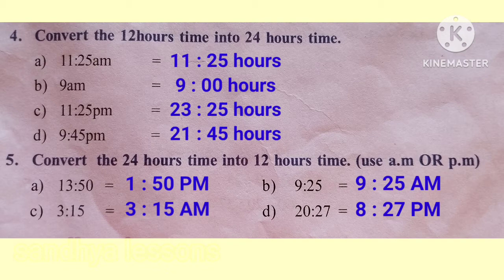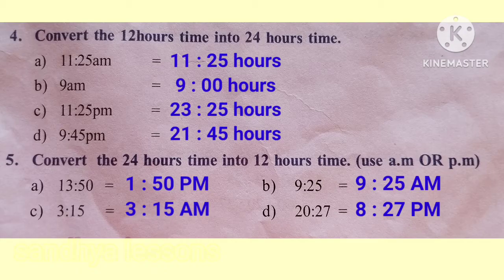D: 9:45 PM equals 21 hours 45 minutes. Fifth question: convert the 24-hour time into 12-hour time using AM or PM. 13 hours 50 minutes equals 1:50 PM. 9 hours 25 minutes equals 9:25 AM. 3 hours 15 minutes equals 3:15 AM. 20 hours 27 minutes equals 8:27 PM.